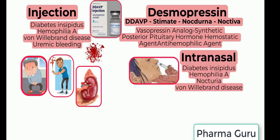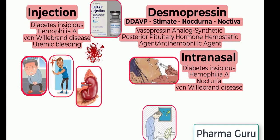The intranasal form is used for the treatment of central diabetes insipidus. The spray can be used for the management of central diabetes insipidus in adults and children more than 4 years of age. The rhinal tube dosage form can be used for the management of diabetes insipidus and management of temporary polyuria or polydipsia following head trauma or surgery in the pituitary region. The intranasal form can also be used for the treatment of mild hemophilia A and for the treatment of refractory nocturia due to nocturnal polyuria in adults who awaken at least two times per night to urinate.